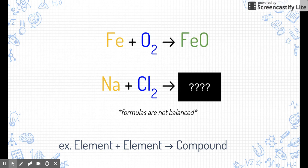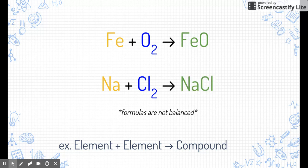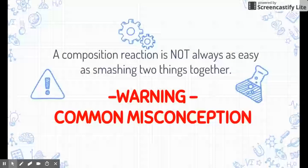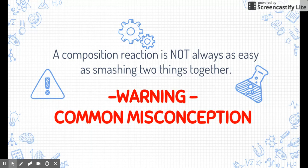Here's our first example — element plus element gives you a compound. At the top we have iron plus oxygen, those are our two elements, and we're going to get iron(II) oxide, our binary compound. A more typical example: sodium plus chlorine gives us sodium chloride. Note that none of these formulas are balanced — you're welcome to pause and try to balance them yourself. Also note a common student misconception: we're not just taking two things and putting them next to each other. When elements go through chemical reactions, they may rearrange themselves.